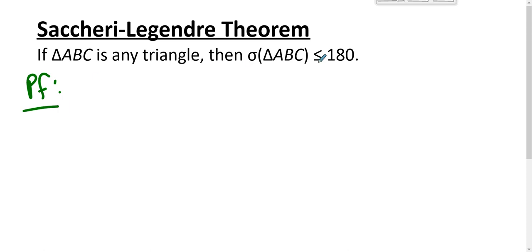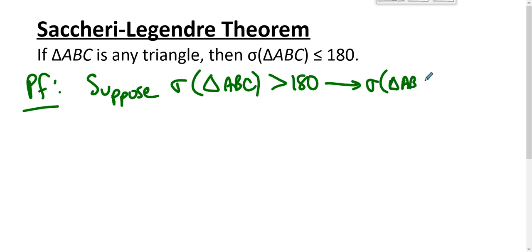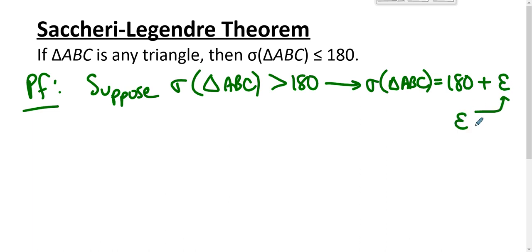As in all great proofs where we want something to be less than or equal to a value, we suppose that the sum of the measures of the angles of triangle ABC is greater than 180, which implies that sigma of triangle ABC equals 180 plus epsilon, where epsilon is a positive real number.